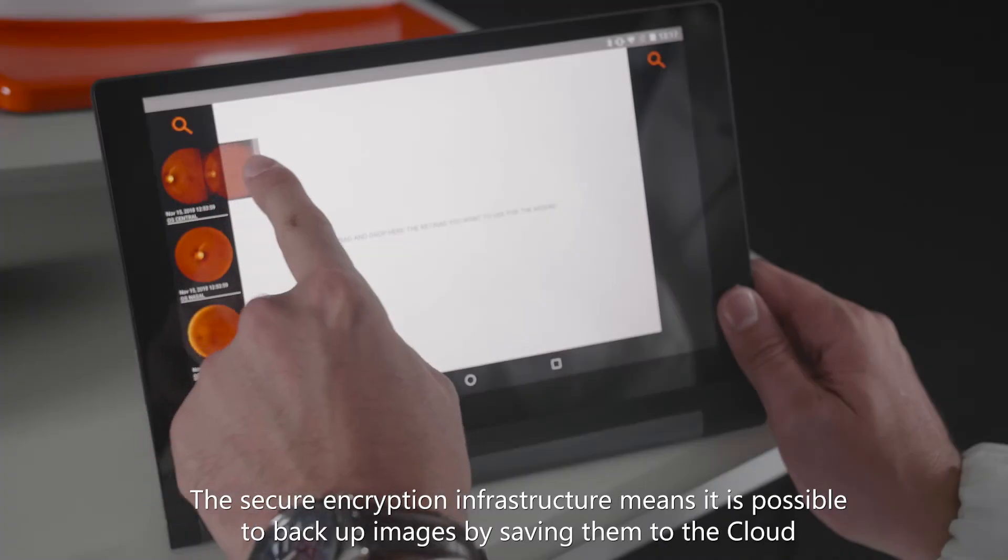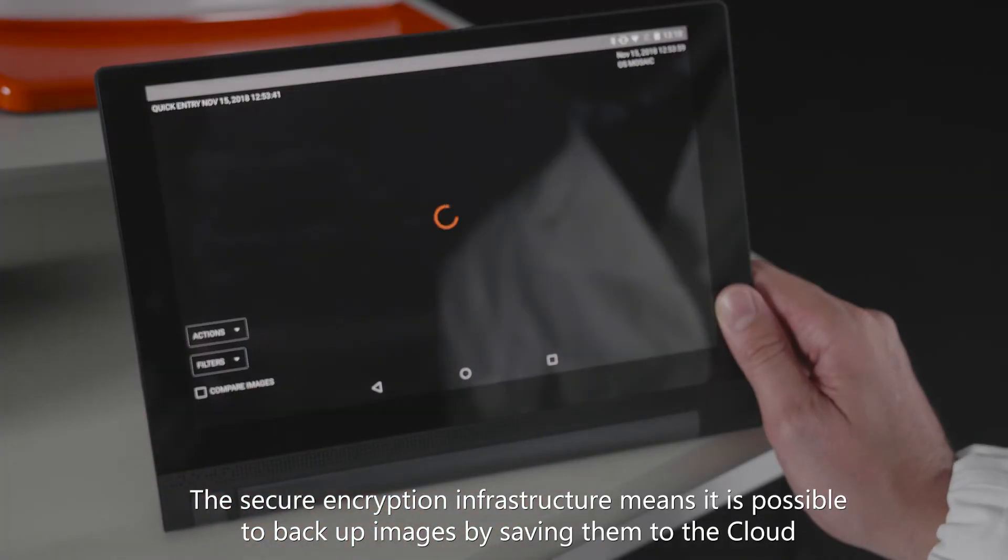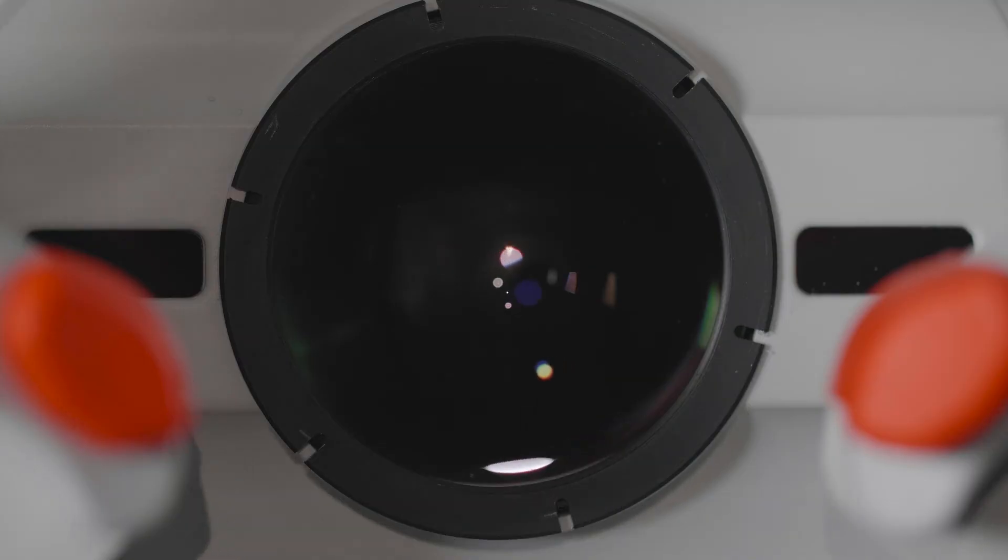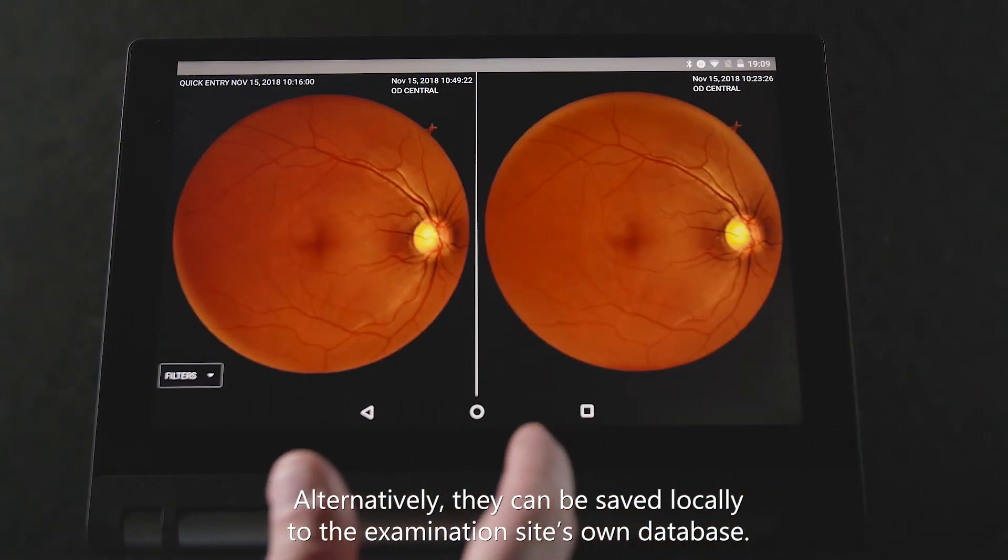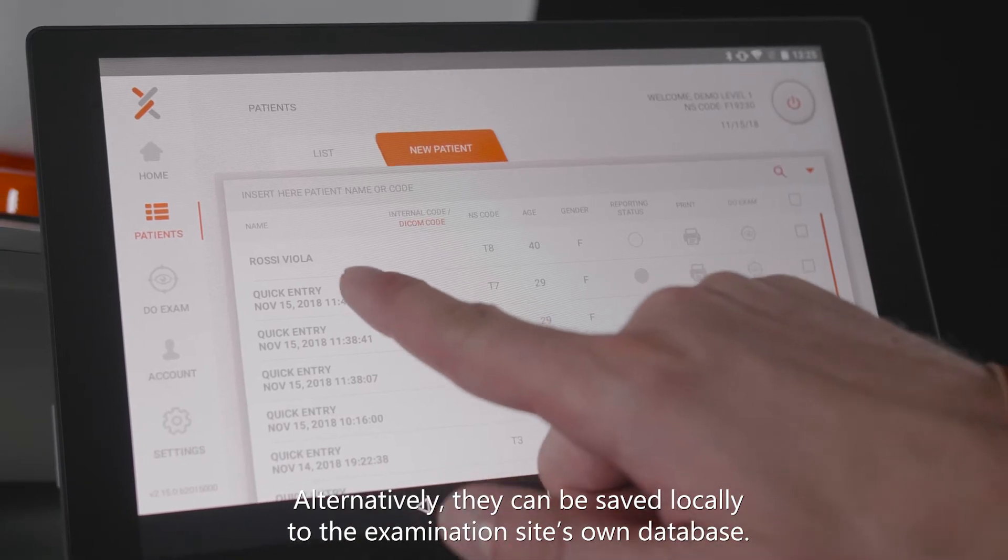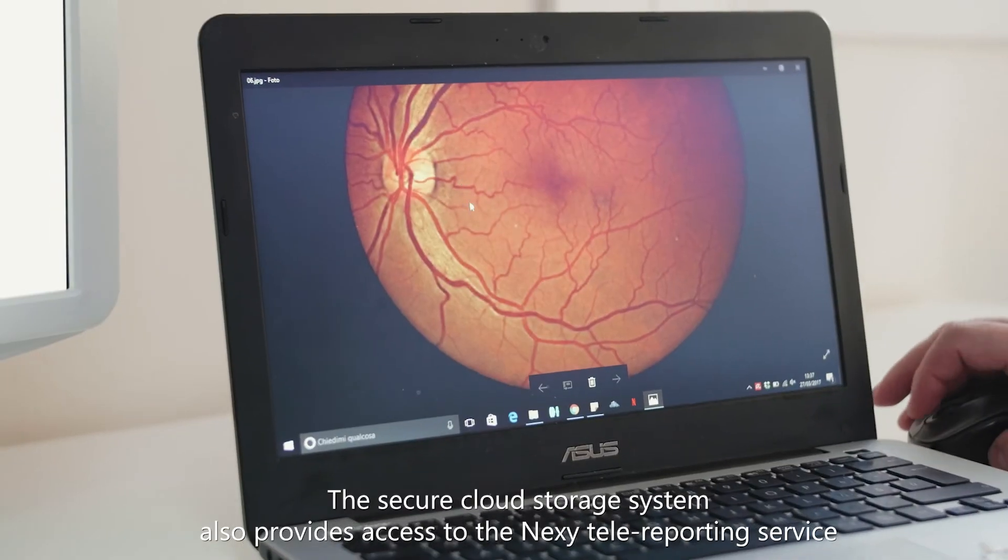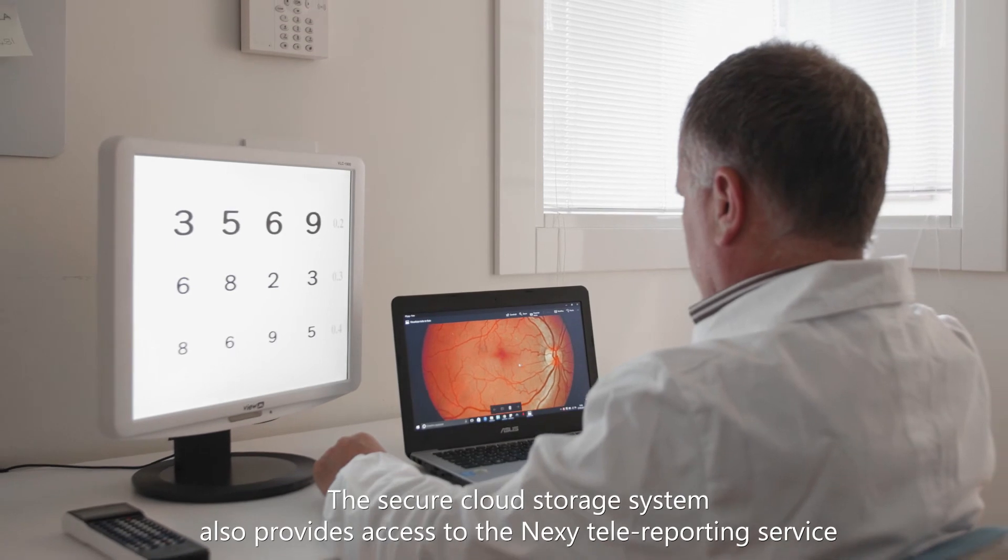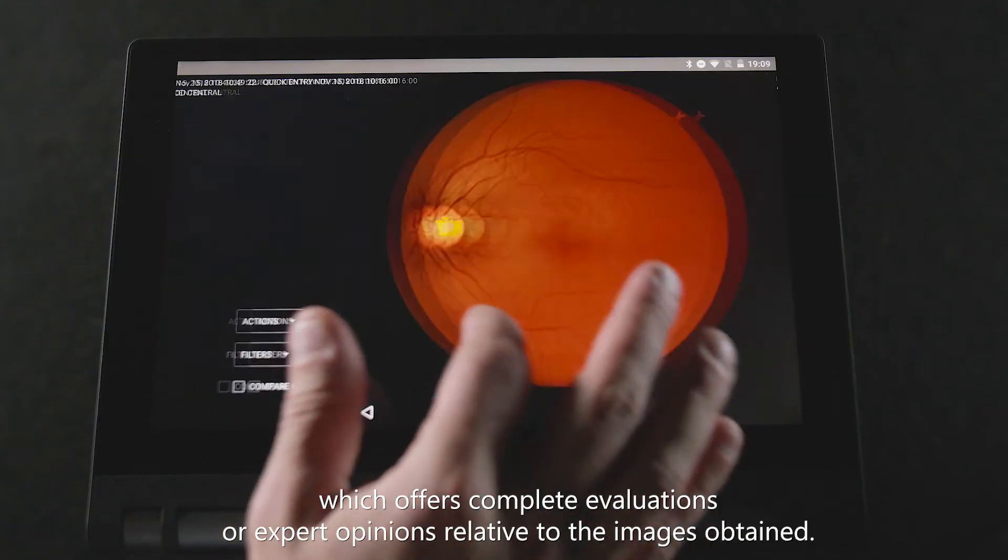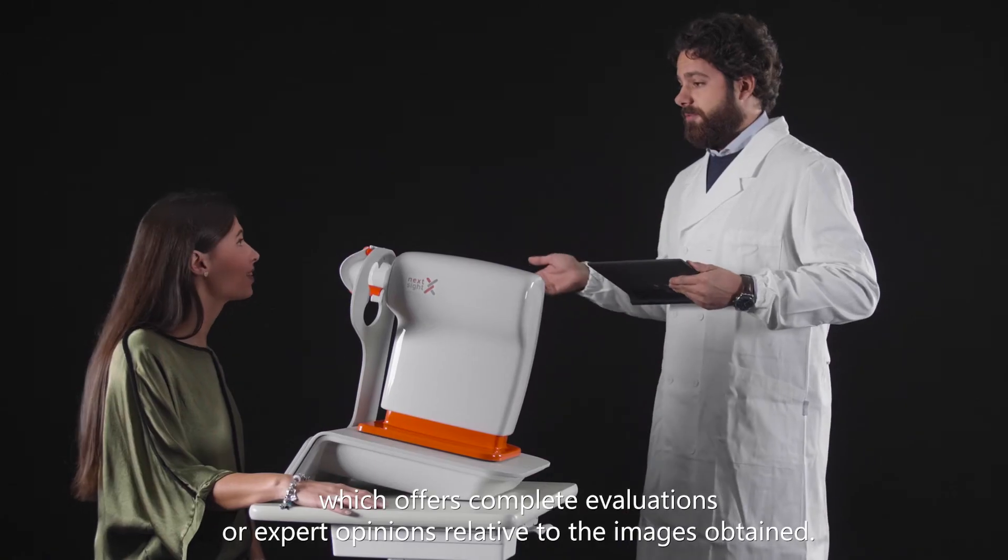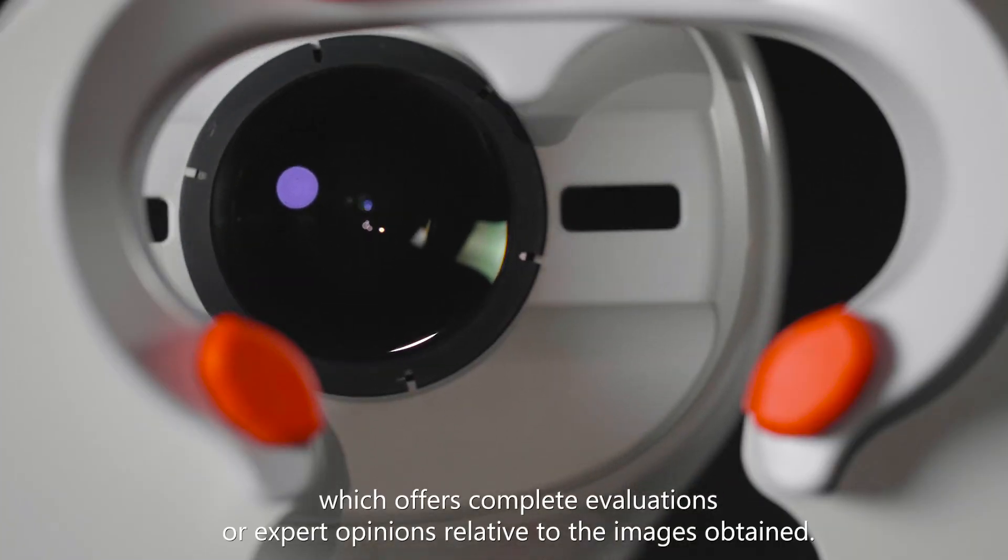The secure encryption infrastructure means it is possible to back up images by saving them to the cloud. Alternatively, they can be saved locally to the examination site's own database. The secure cloud storage system also provides access to the Nexi tele-reporting service, which offers complete evaluations or expert opinions relative to the images obtained.